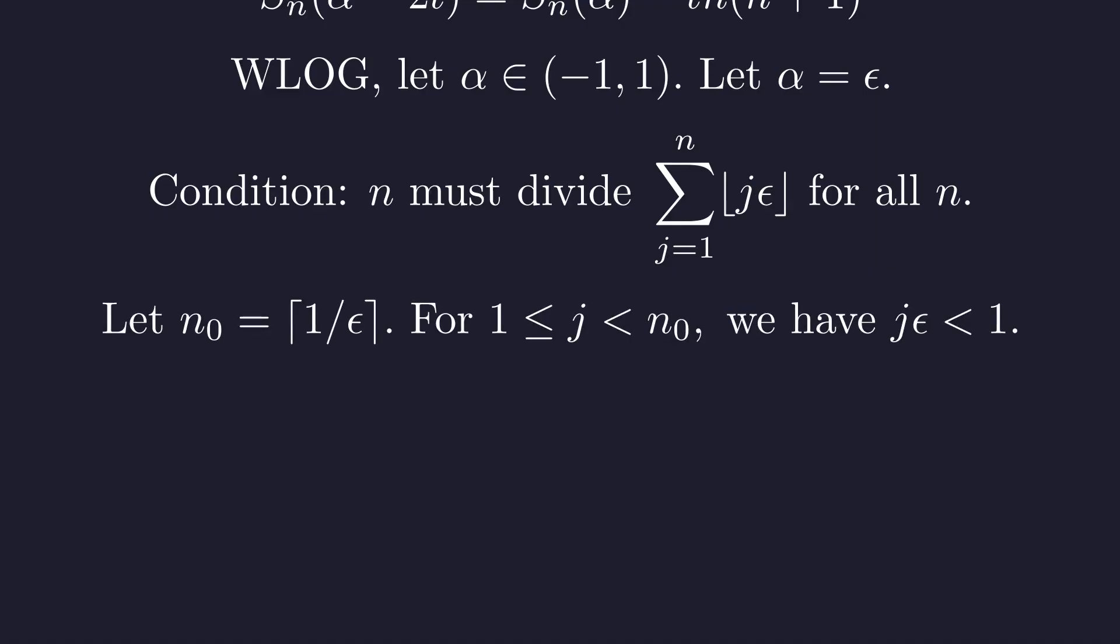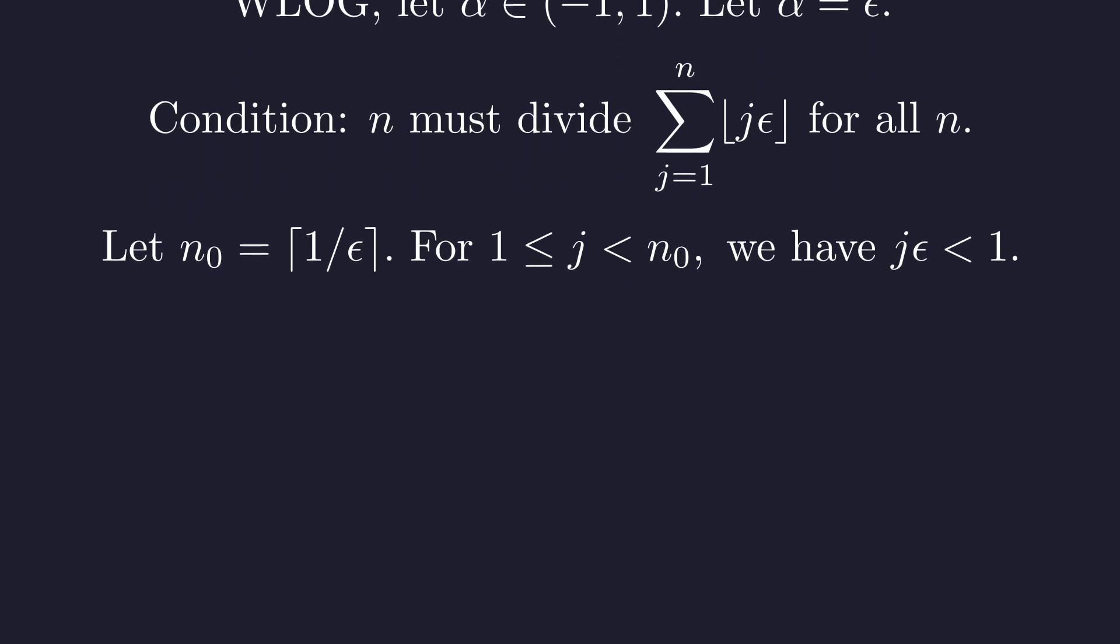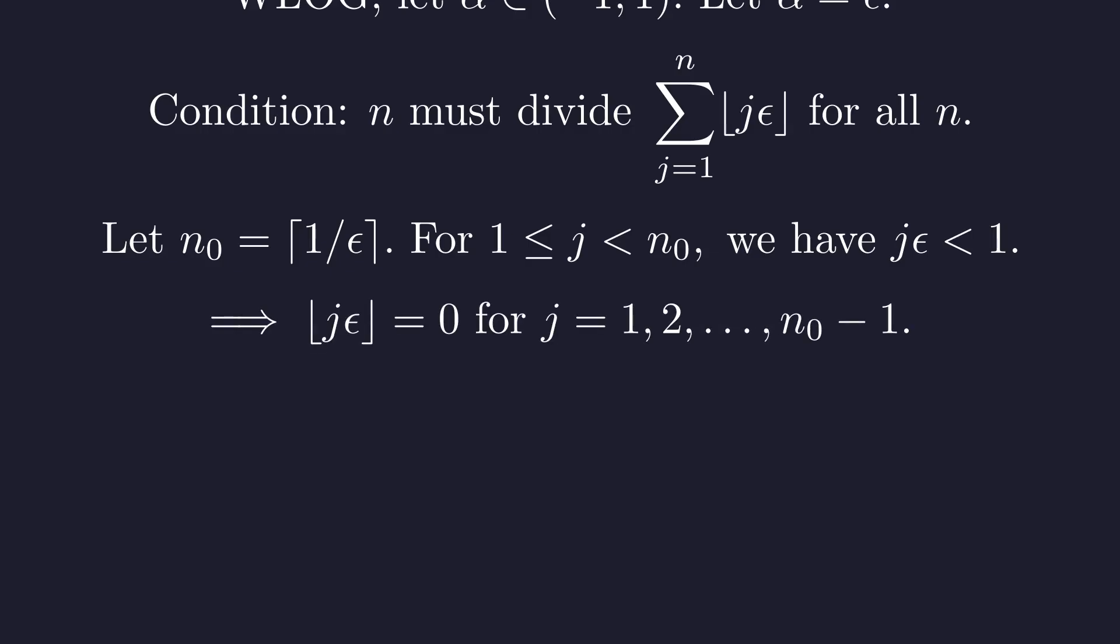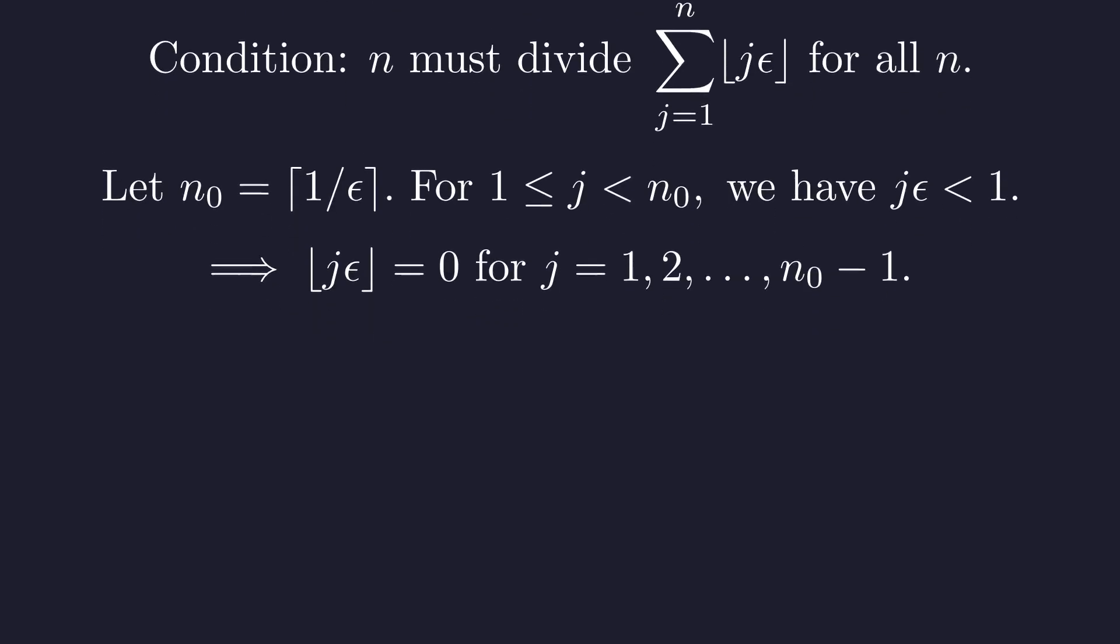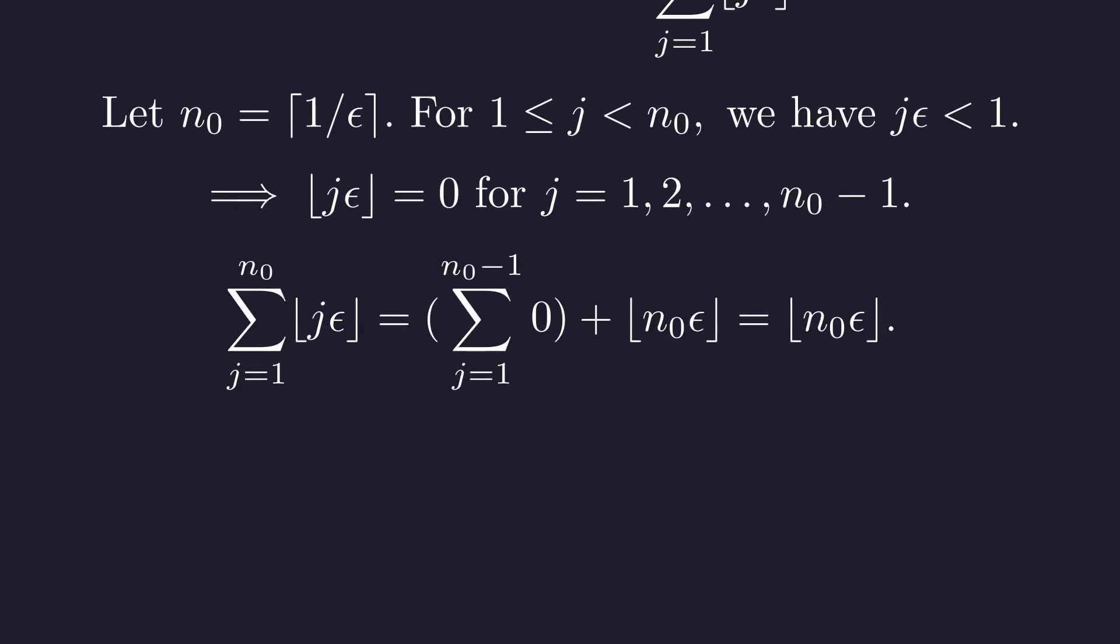Let's choose a special value of n, which we'll call n sub 0, defined as the ceiling of 1 over epsilon. For any j strictly less than n sub 0, j times epsilon is less than 1. Therefore, the floor of j times epsilon is 0 for all of these initial terms in the sum. This means the sum up to n sub 0 collapses, leaving only the very last term.